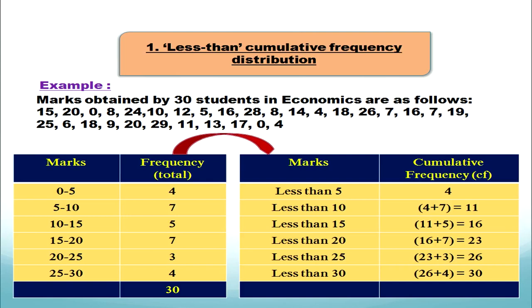We can verify: cumulative frequencies are 4, 11, 16, 23, 26, 30. The sum total of frequencies was 30, and the last cumulative frequency is also 30 — this is the cross check. We must get 30 as the last cumulative frequency to confirm we have done it correctly.